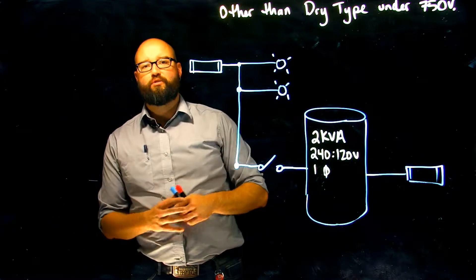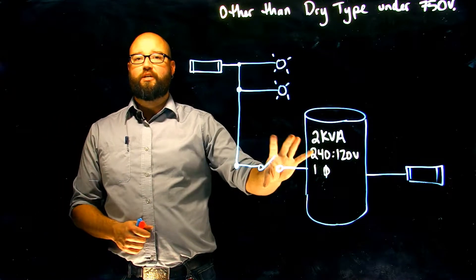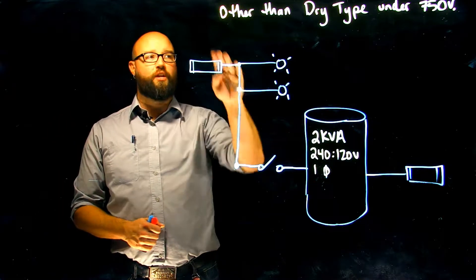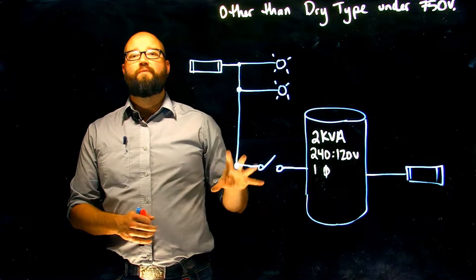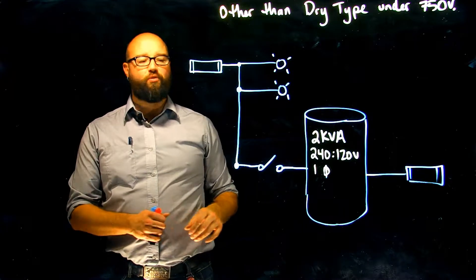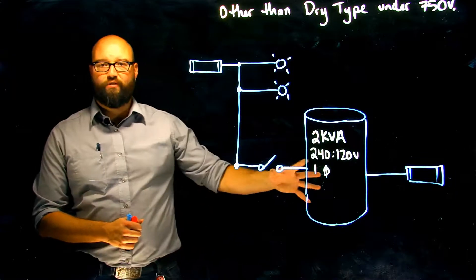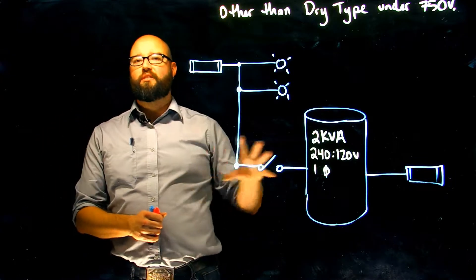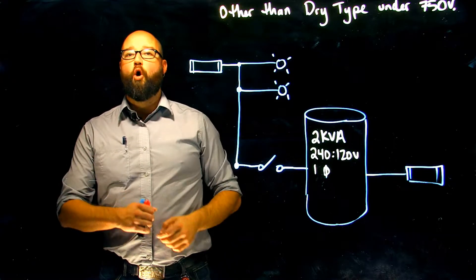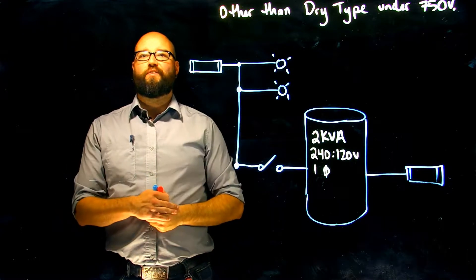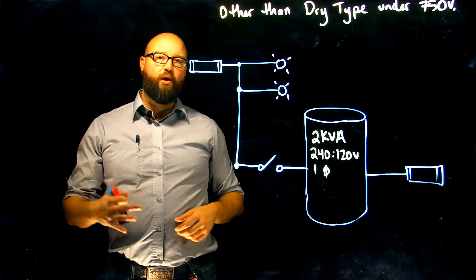In previous videos we've gone through — especially the third video — we looked at primary protection only on an other-than-dry-type transformer under 750 volts. In this video we are taking a look at what we do if we want to omit that primary protection. As in other videos, we've done this calculation for dry type under 750 as well as over 750 volt transformers, and it essentially works out to be the same process.